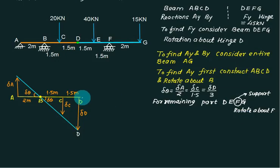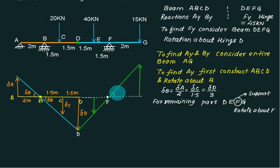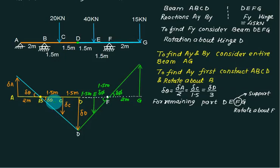Draw the dotted line here. For the DG part, D is coming downward and you rotate about F — so the figure goes this way: the portion DF goes downward and portion FG goes upward about point F. This means E has moved downward and G has gone upward. The angle made is different from Del Theta, so we call this angle Del Phi. The linear distance between F and G is 2 meters. In this problem we have two unknowns: Del Theta and Del Phi.